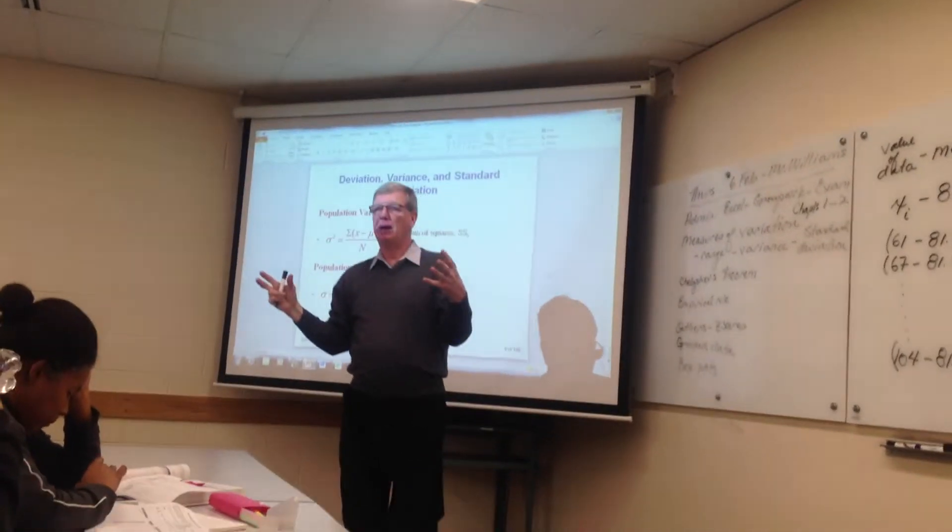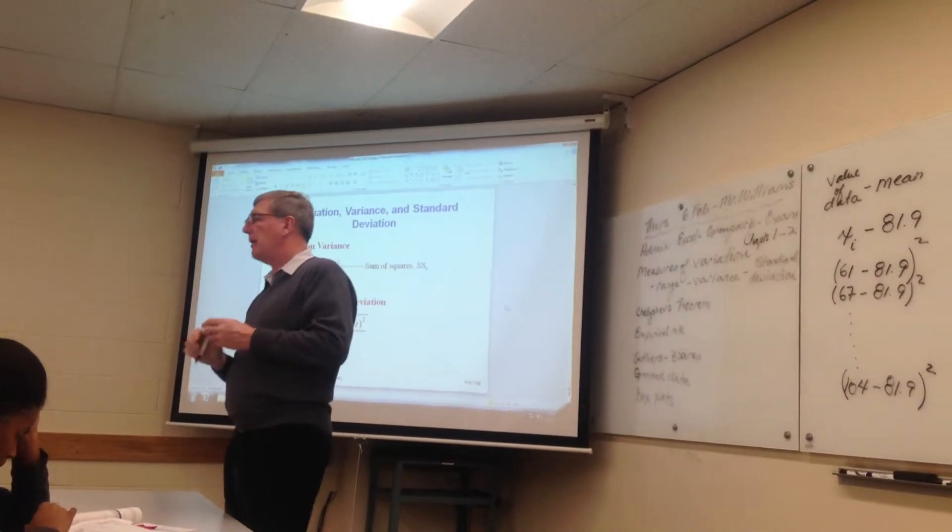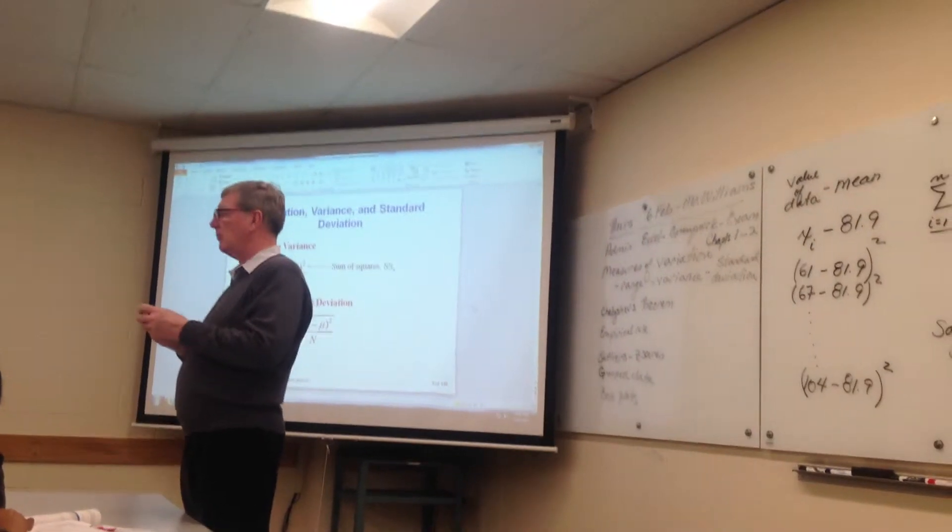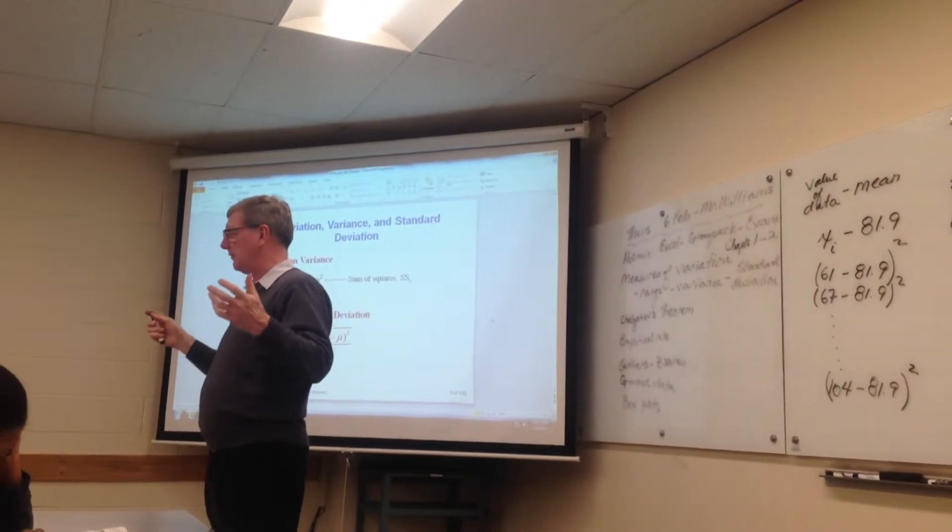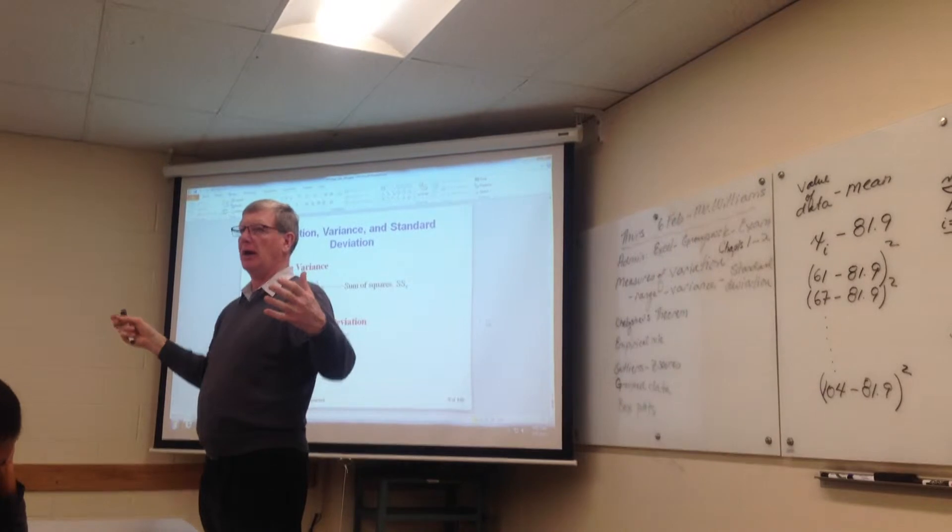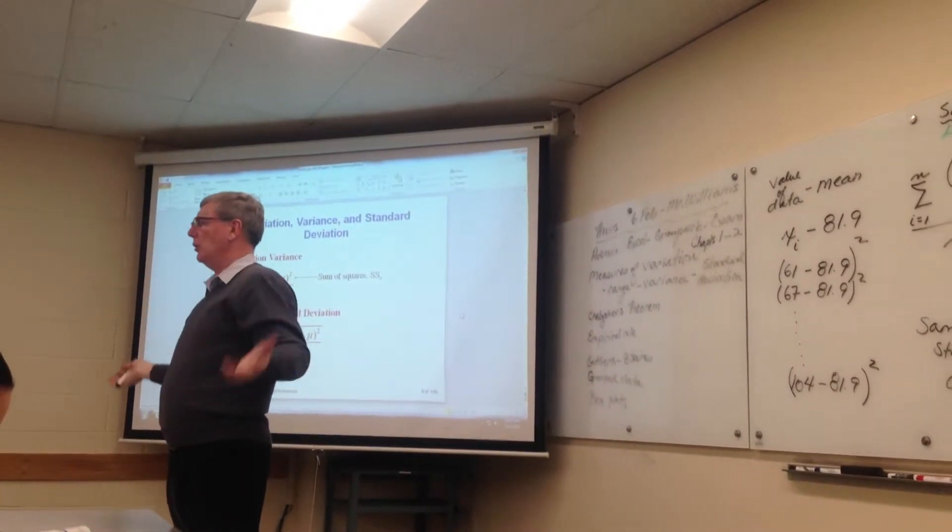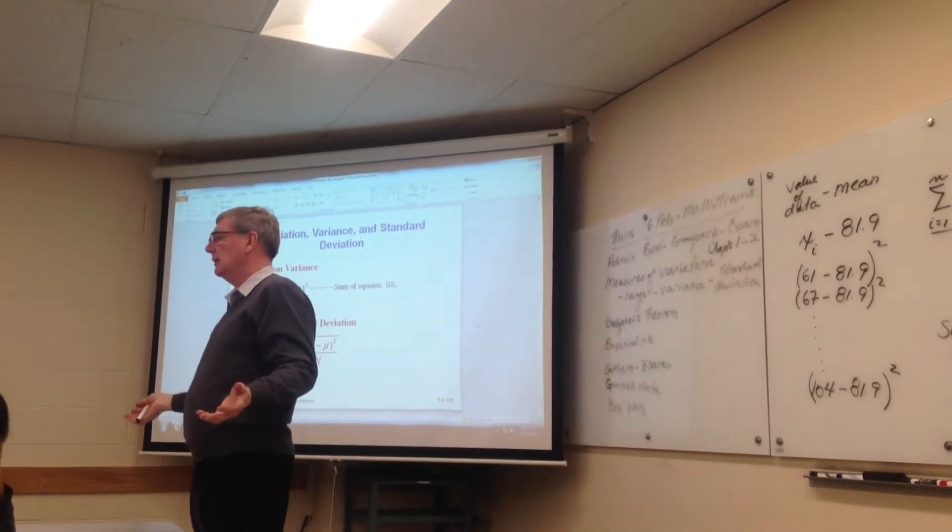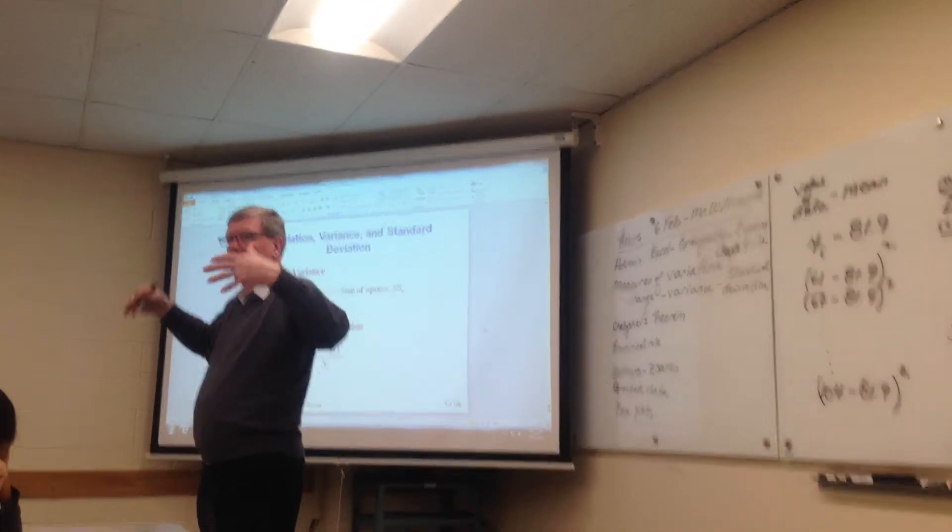Because if I have the whole population, if I somehow magically have every ATM withdrawal that ever happened to this ATM machine, I would have the whole population of data. We don't. We have 30 days. We don't have the population.